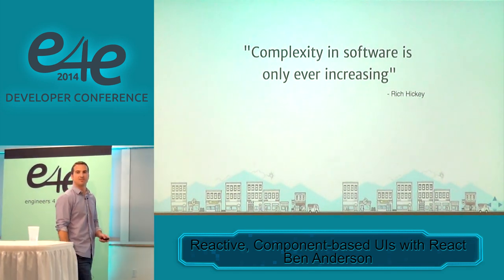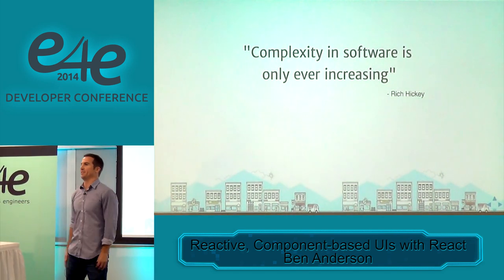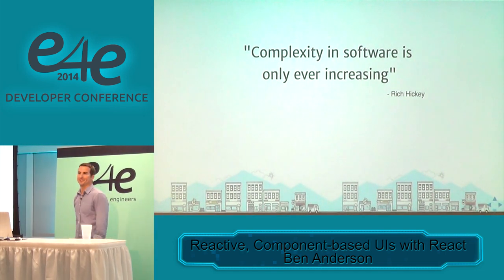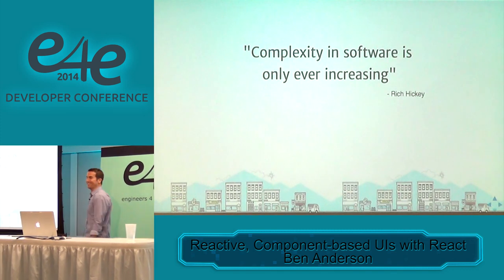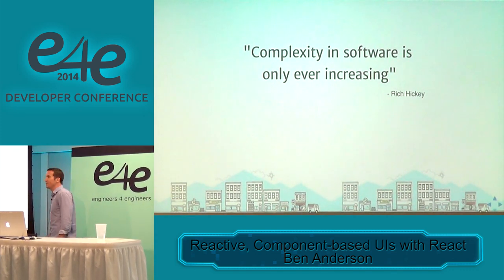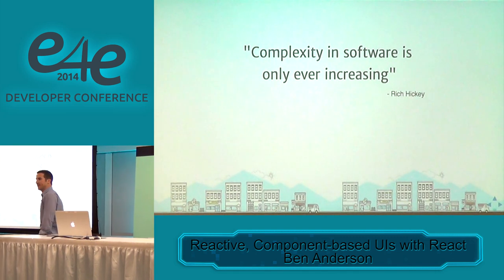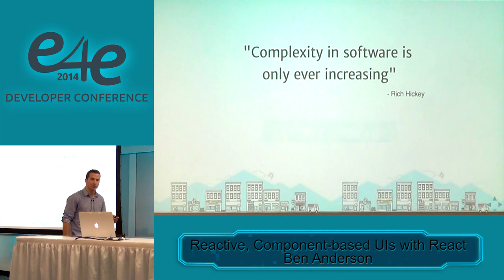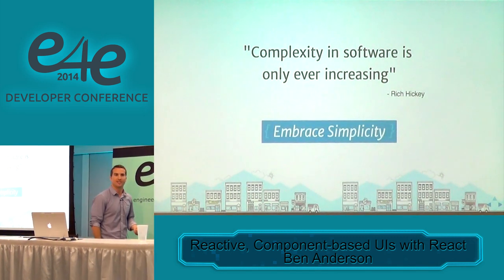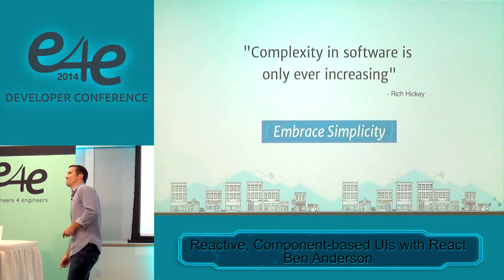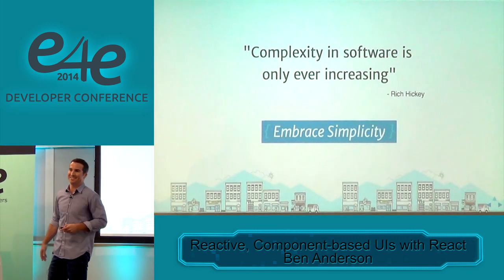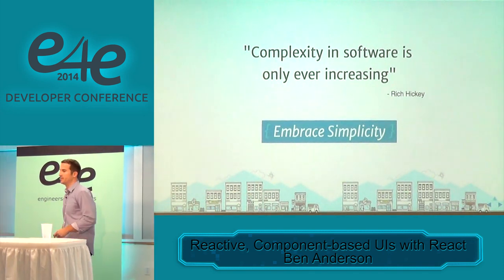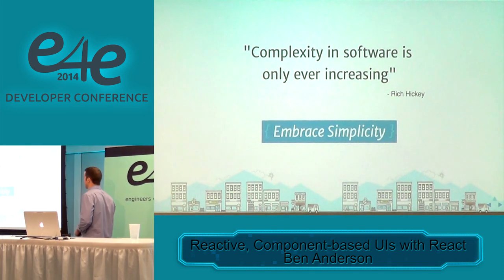Who here works for a company that is building less user interface as they go on? Complexity in software is only ever increasing — this is not going to get easier. We only have one thing we can do: we can't stop that. The only thing we can do is choose simpler tools that solve these big problems in ways that let us be more sane as developers. We don't want to search through 100 functions to find the bug — we want to get to that thing as soon as possible so we can move on to more interesting problems.